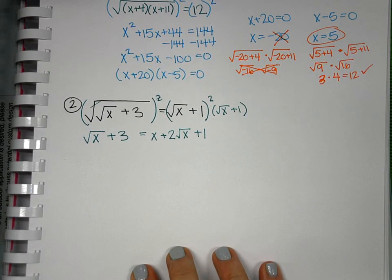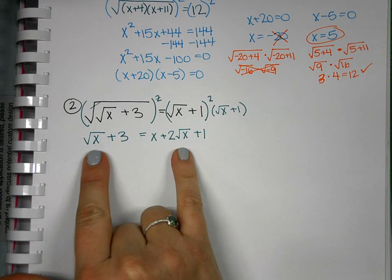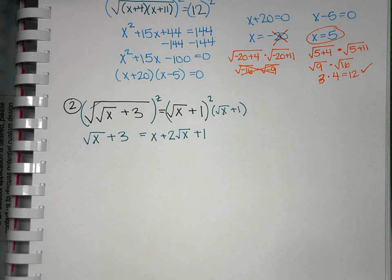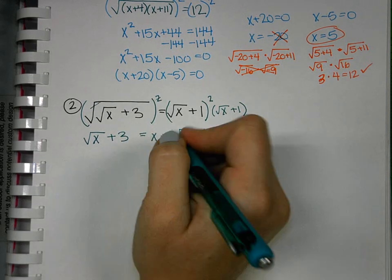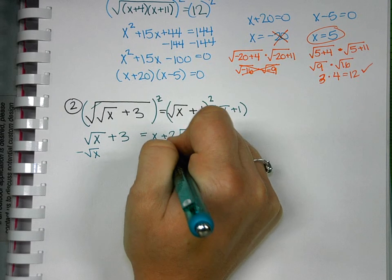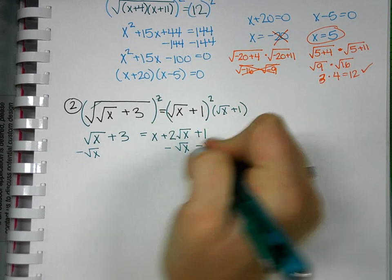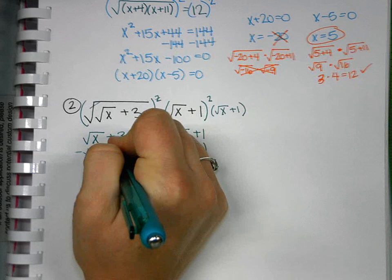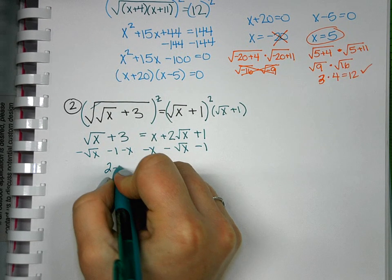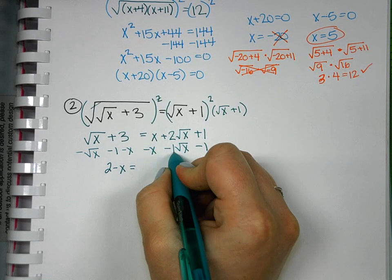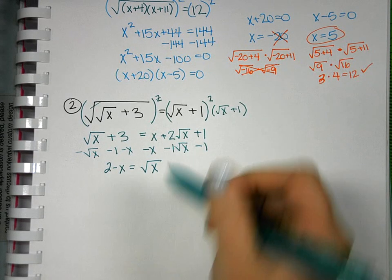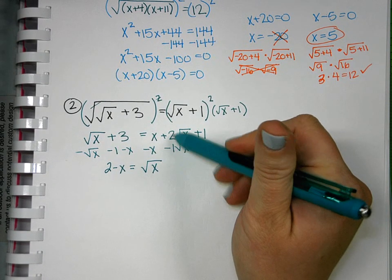Now I need to get my radicals together, and what's great is that they're both just a square root of x. They're both just a square root of x, which means they're like terms. I can add the coefficients in front of them to combine them. So let's subtract the square root of x to both sides, and I'm also going to move the 1 and the x to the other side. I'll get 2 minus x on the left, and then 2 minus 1 gives me just root x.